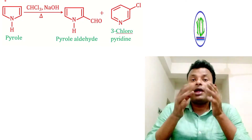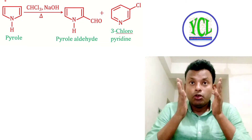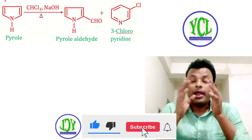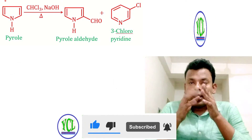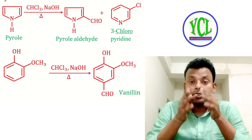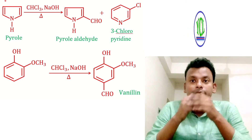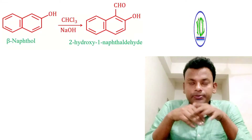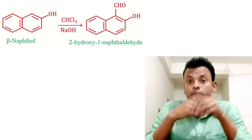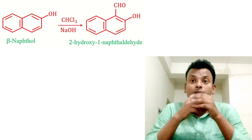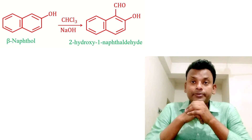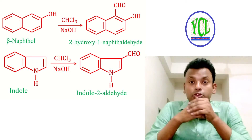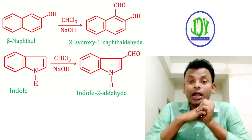Additional examples: pyrrole reacts with chloroform and NaOH with heat to give pyrrole aldehyde and also 3-chloropyridine. Ortho-hydroxy anisole reacts with chloroform and NaOH with heat to give vanillin. Beta-naphthol reacts with chloroform and NaOH to give 2-hydroxy-1-naphthaldehyde. Indole reacts with chloroform and NaOH to give indole-3-aldehyde.